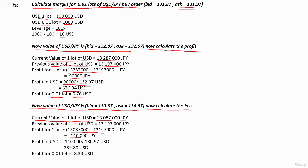This is the loss in JPY. To calculate the loss in USDs, we divide it by the current ask price. This is the loss in USDs, and this is the loss for 0.01 lot.